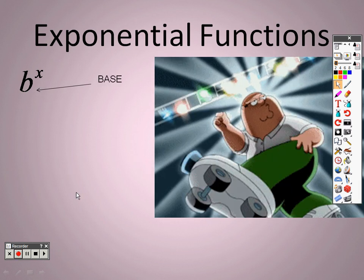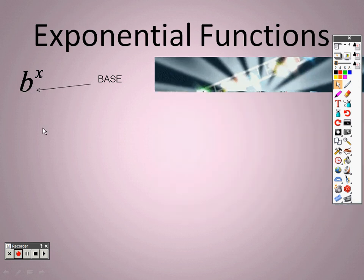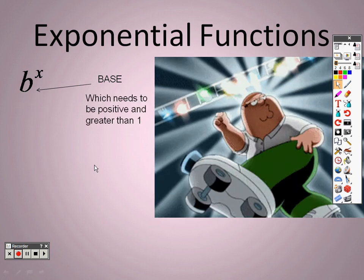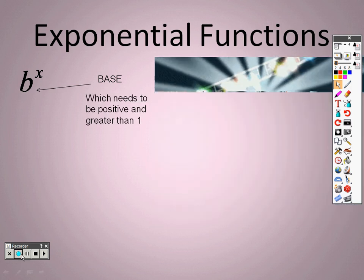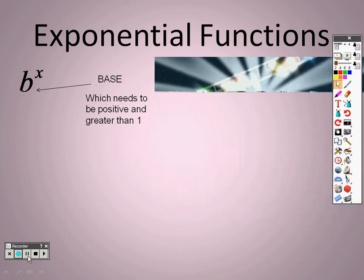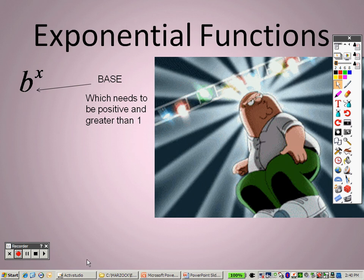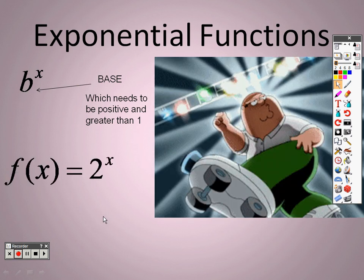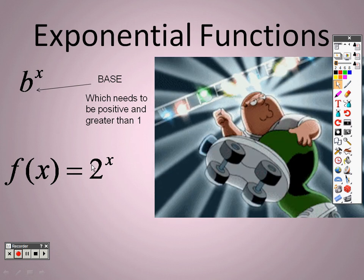Now we have the x in the exponent, and b is a number down below as the base. The base b needs to be positive and greater than one. For example, two to the x: your base is two, which is positive and greater than one, and the exponent is the variable x.